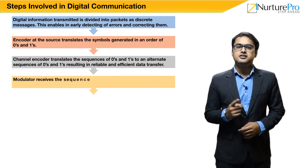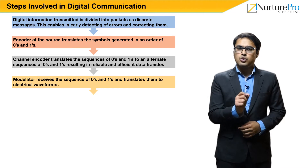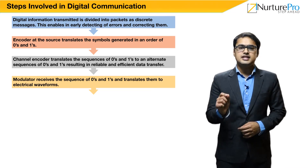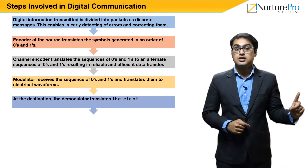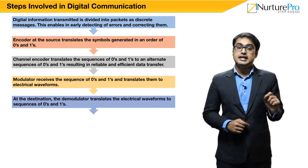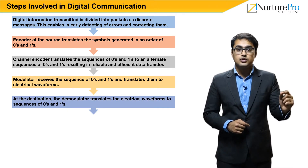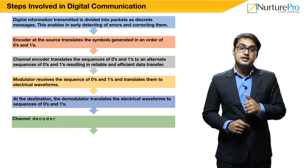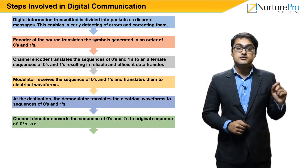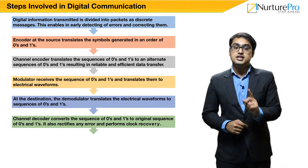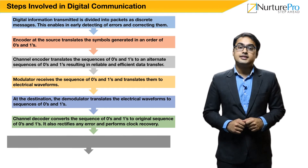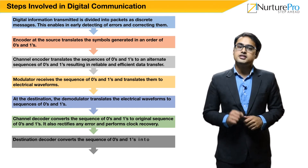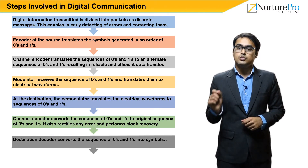In the fourth step, the modulator receives the sequences of zeros and ones and translates them into electrical waveforms. In the fifth step, at the destination, the demodulator translates the electrical waveforms back to sequences of zeros and ones. Finally, the channel decoder converts the sequences of zeros and ones to the original sequence of zeros and ones. It also rectifies any errors and performs clock recovery. At the destination, the decoder converts the sequences of zeros and ones into symbols.